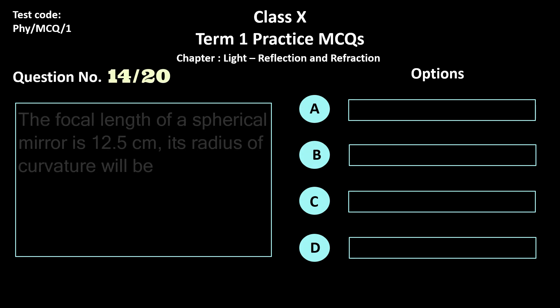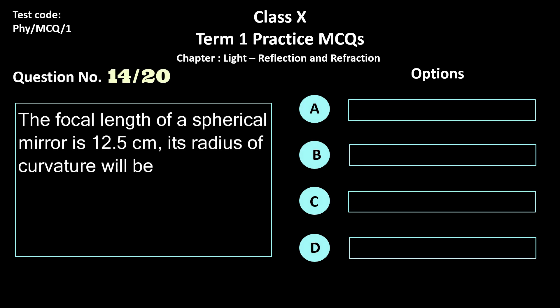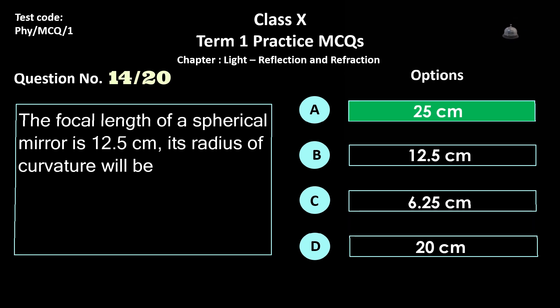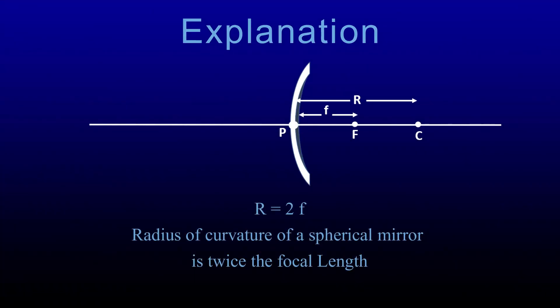Question 14. The focal length of a spherical mirror is 12.5 cm. Its radius of curvature will be — options: a) 25 cm, b) 12.5 cm, c) 6.25 cm, and d) 20 cm. The correct answer is option a, 25 cm. The radius of curvature is twice the focal length.